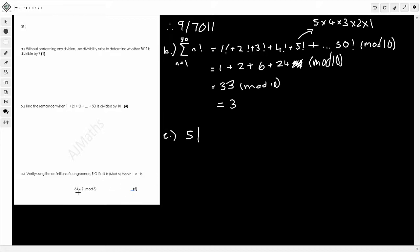If it doesn't, then it's not congruent to this equation that we've been given here. So A minus B, my A is going to be 34 minus the B, which is going to be 9. So 5 should divide 34 minus 9. 34 minus 9, that's going to give me 25. And this is perfect. 5 does divide 25 because you can do 5 times 5. So therefore, this verifies it. Therefore, verified.